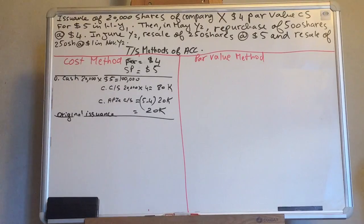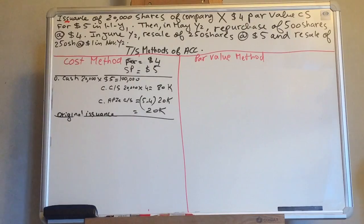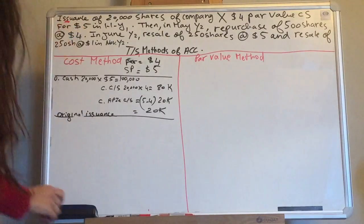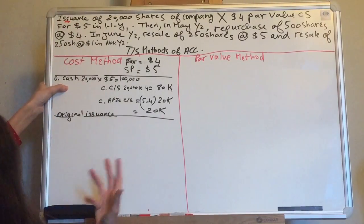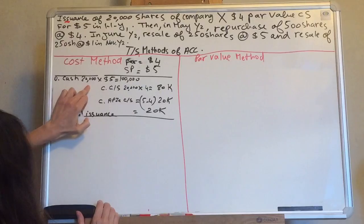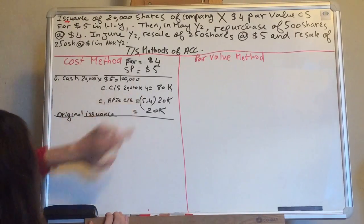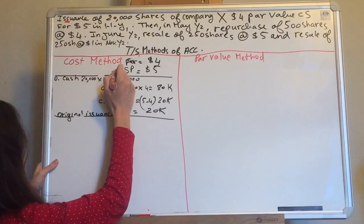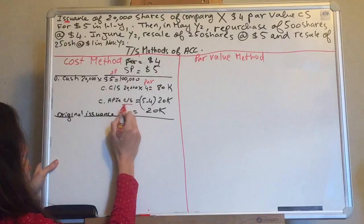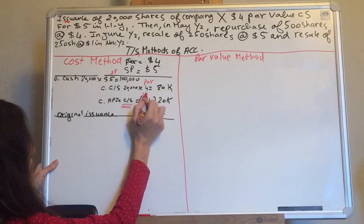Let's repeat quickly. We have the issuance — issuance means sale. Of 20,000 shares of Company X, $4 par, sold at $5. When you issue something, your cash increases because you are selling. The debit side is cash: number of shares times selling price. You always credit common stock and APIC common stock. Common stock is number of shares times par value. APIC common stock is the excess: selling price minus par, times number of shares.